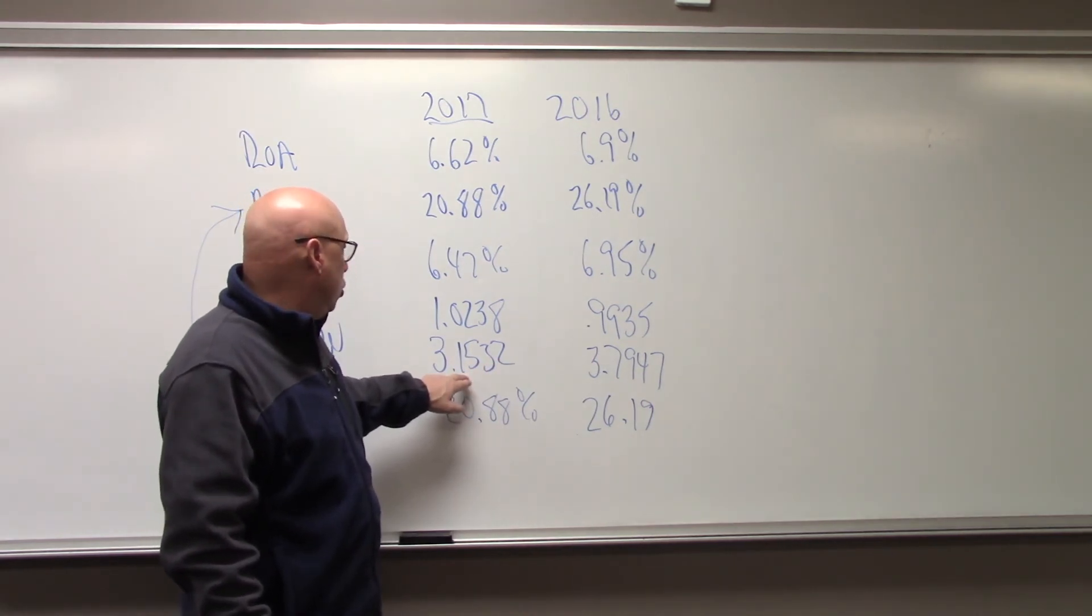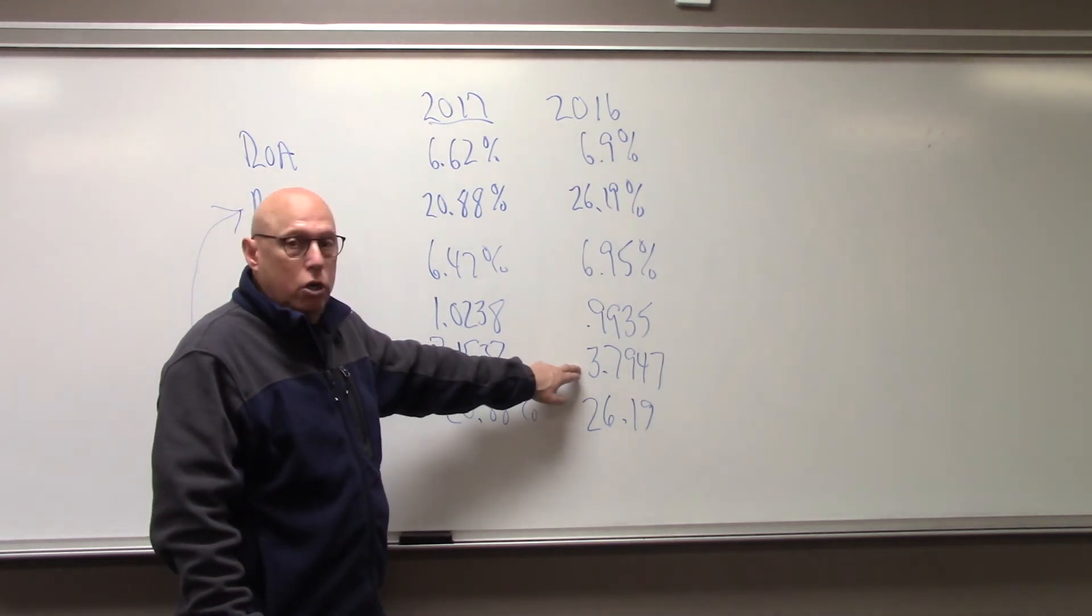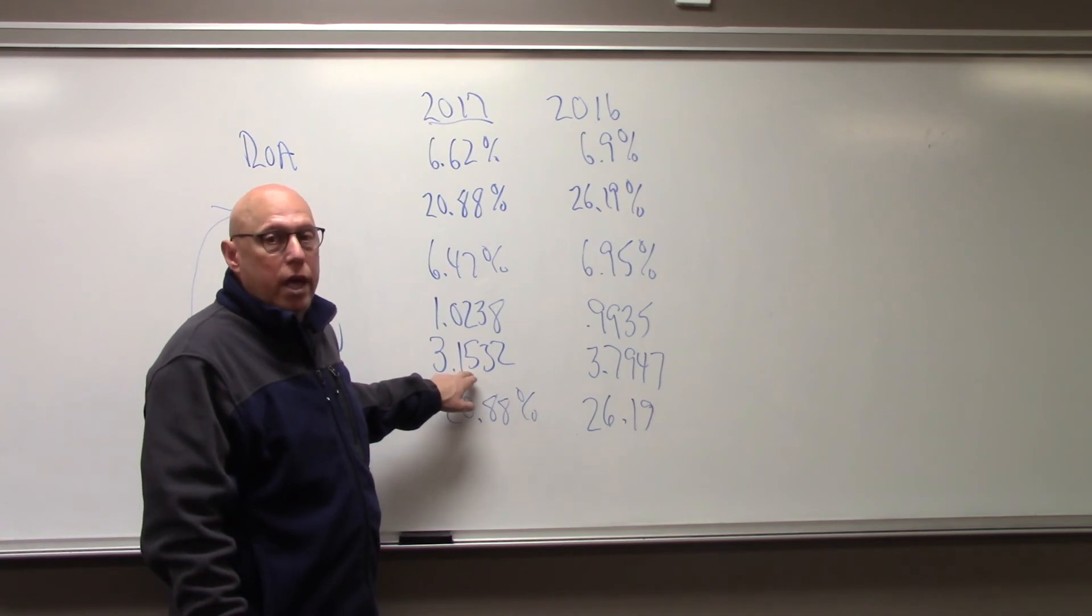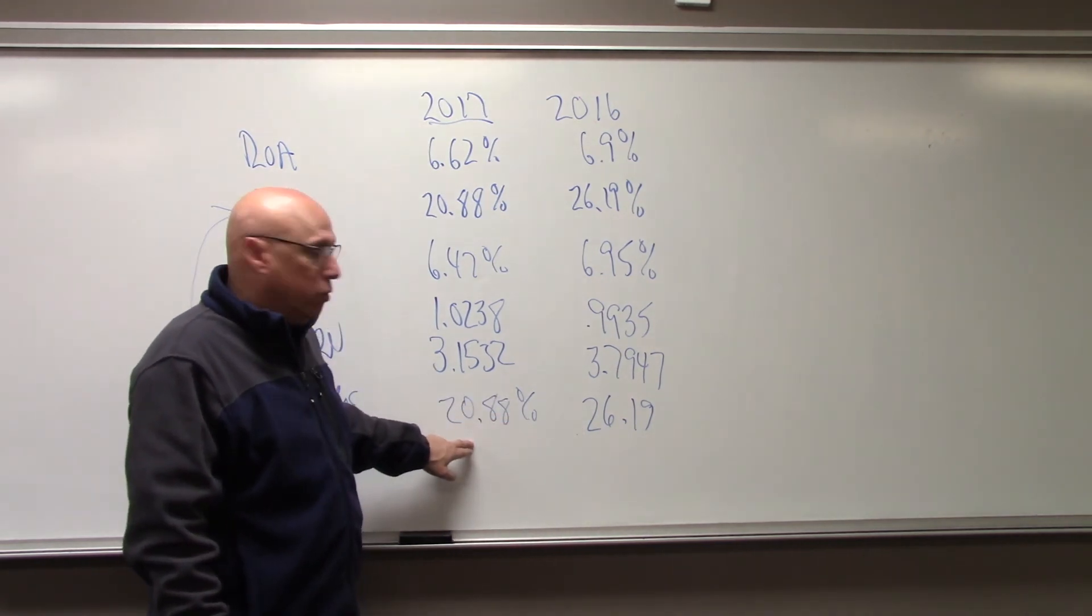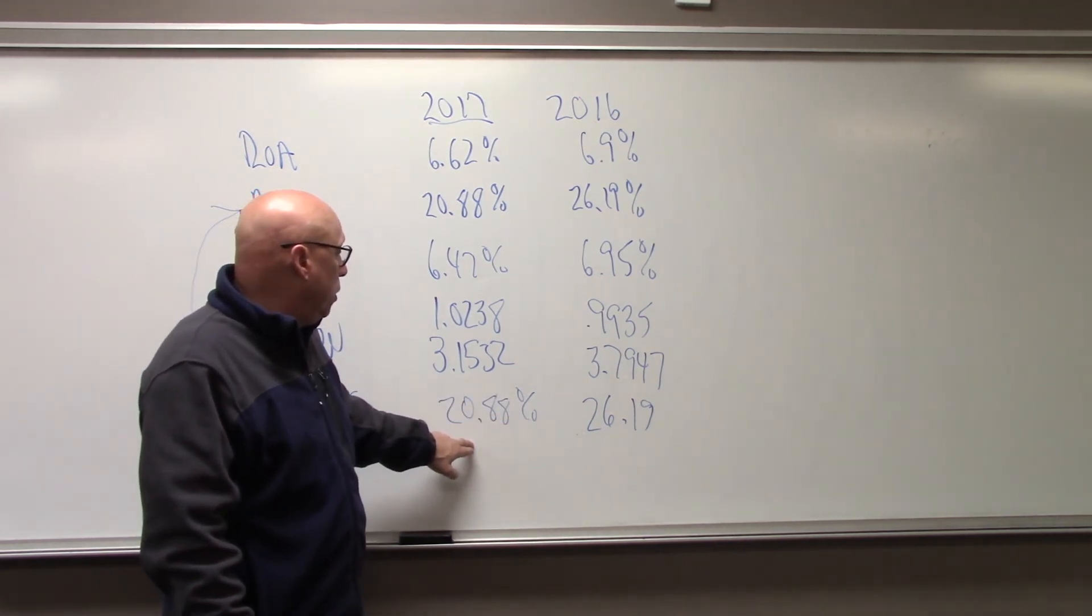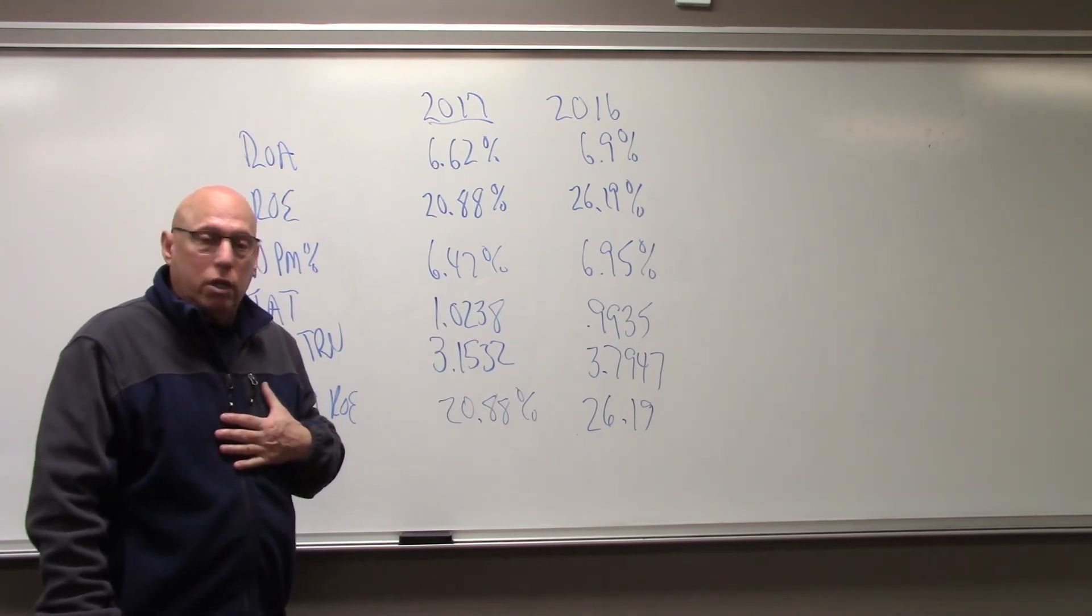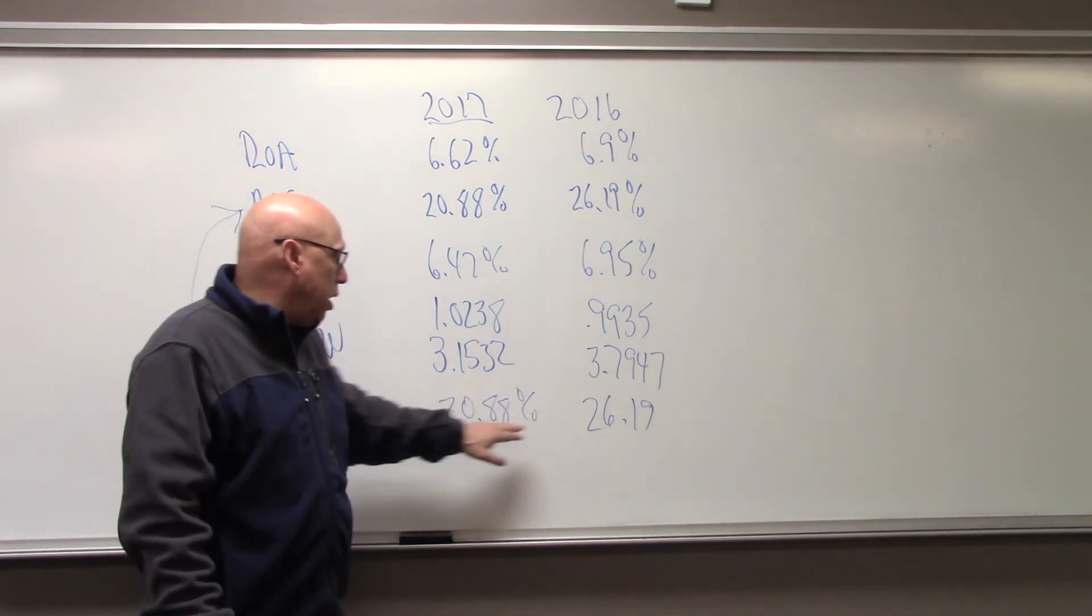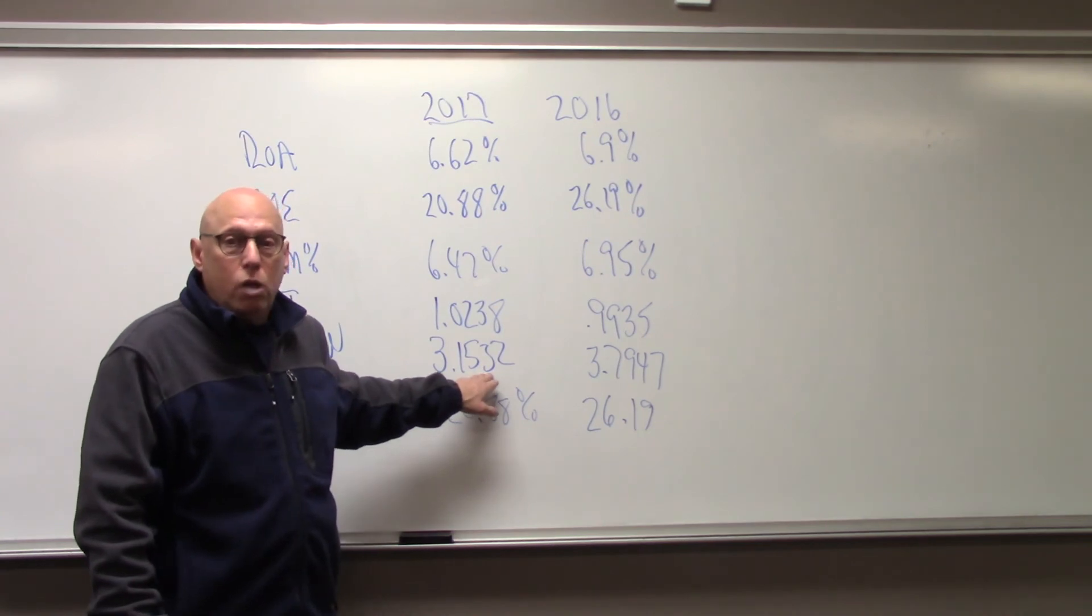But look at here. Their leverage dropped big time. The drop in leverage, their equity turnover, went way down from here to here. That means they reduced their leverage. And that is what's most responsible for the decline. As an investor trying to ascertain the risk of the company, am I really upset that their return on equity went down because they reduced their leverage? And the answer is no.